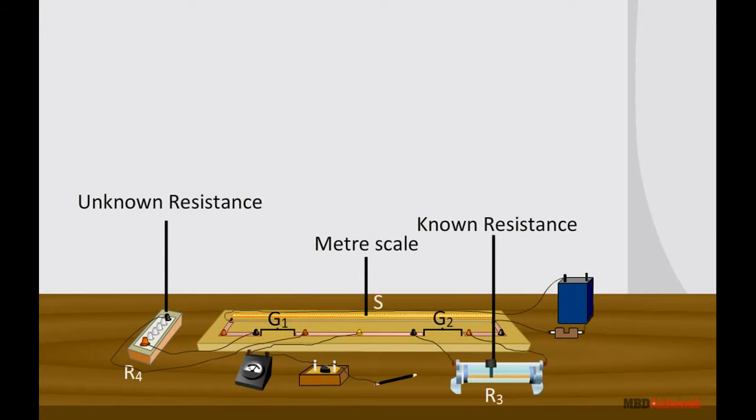A meter scale is also fitted on the wooden board parallel to the length of the wire. A galvanometer is connected to the metallic strip midway between the two gaps.